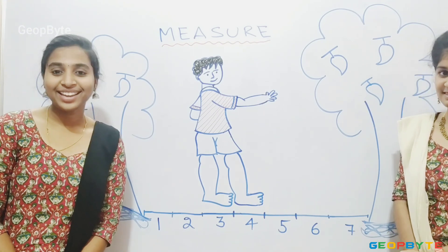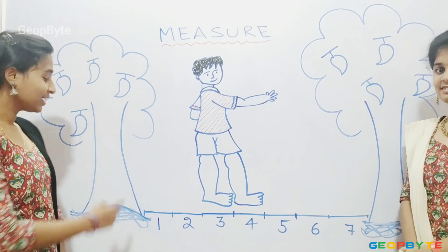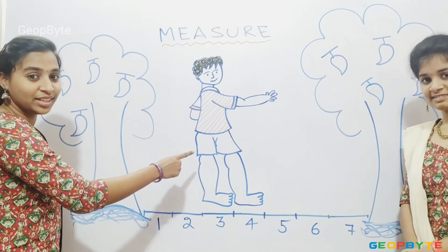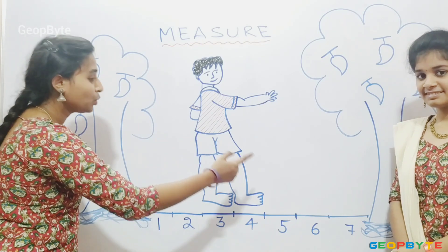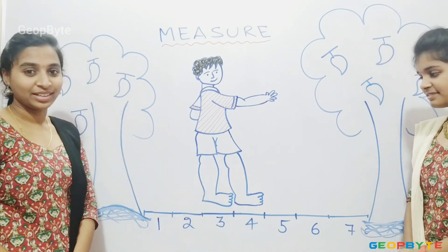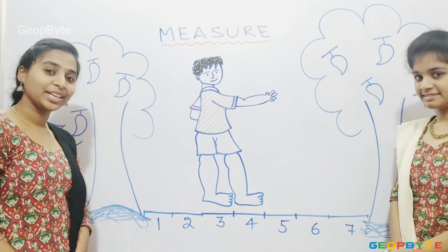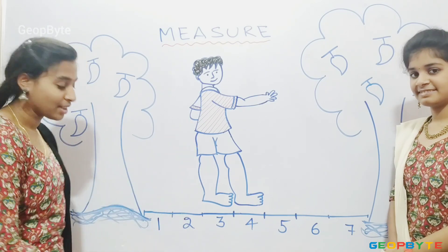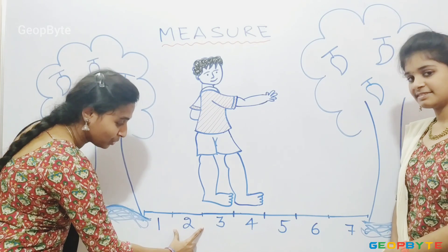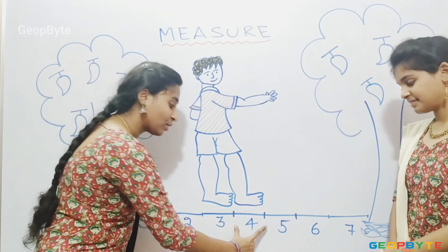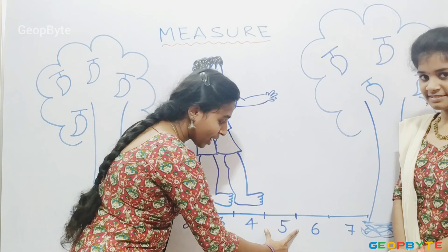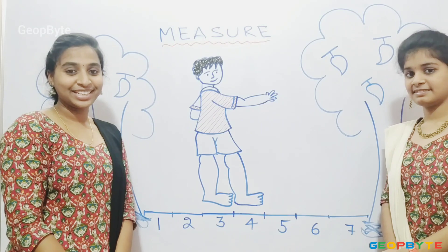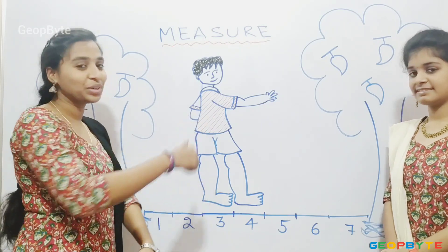Hey kids, see here, there are two trees. This boy measured the distance between the two trees using the feet method. He got totally seven feet distance between the two trees. One, two, three, four, five, six and seven. He got seven feet distance between these two trees.